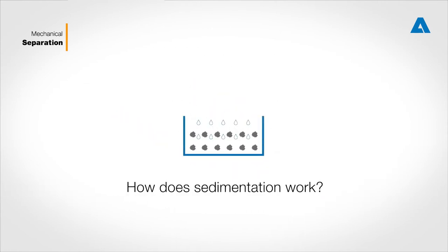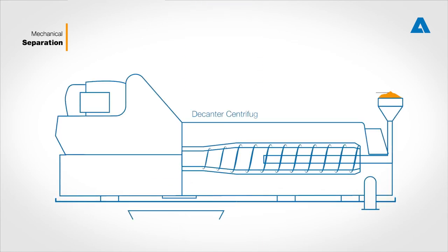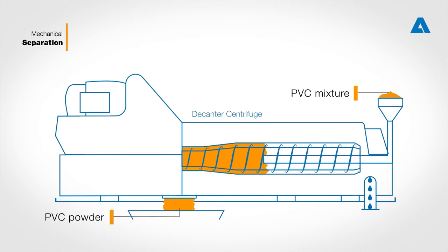And how does sedimentation work? Let's take a look at PVC production where decanters are used to dehydrate the mixture and extract the PVC powder, one of the most produced synthetic plastics worldwide.